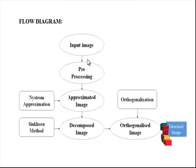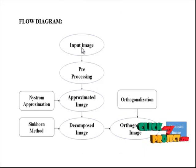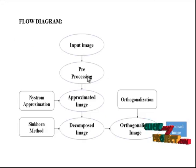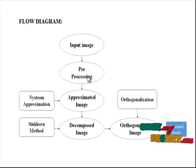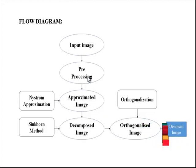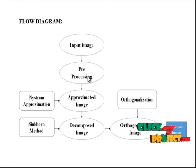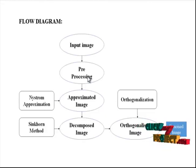Let us discuss about the flow diagram for our process. The input image is taken from the dataset folder. Next, in the pre-processing step, image pre-processing concepts are applied. Pre-processing is required to evaluate and prepare the image for further processing. In the pre-processing step, we can resize the image to a specified size. We add noise to the image in terms of a sigma value. If we increase the sigma value, the noise ratio increases, so the PSNR value gradually decreases.